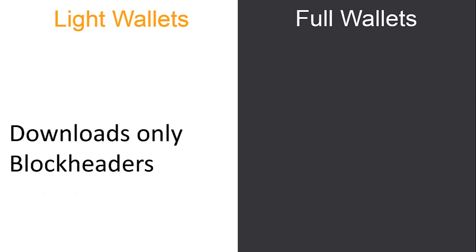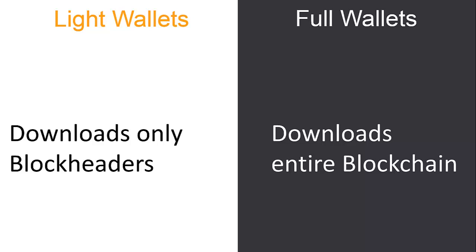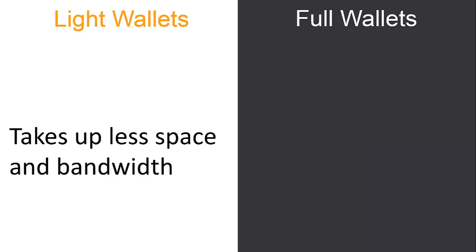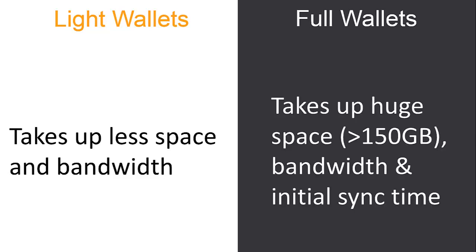Light wallets only download the block headers — they don't download the entire blockchain like full wallets do. Because of this, light wallets take up very little space and bandwidth and are very easy to set up. Usually all the mobile app wallets we use, and a few desktop wallets, are lightweight wallets — that's why they're minimal in size and easy to set up.